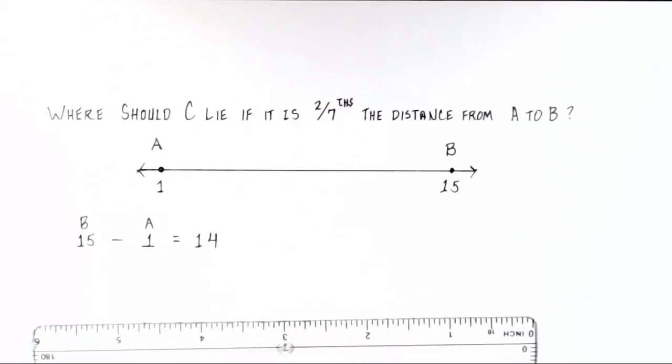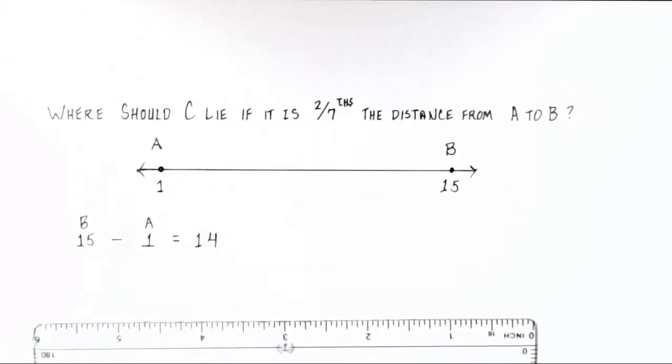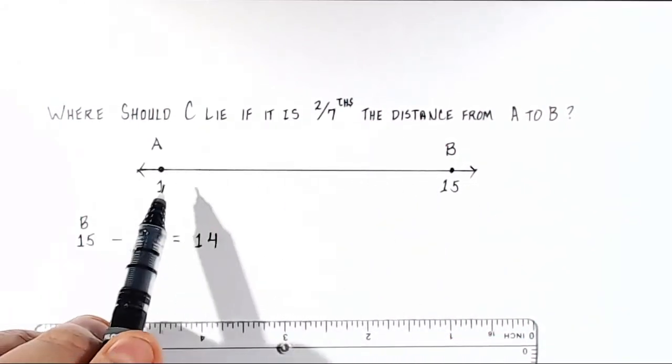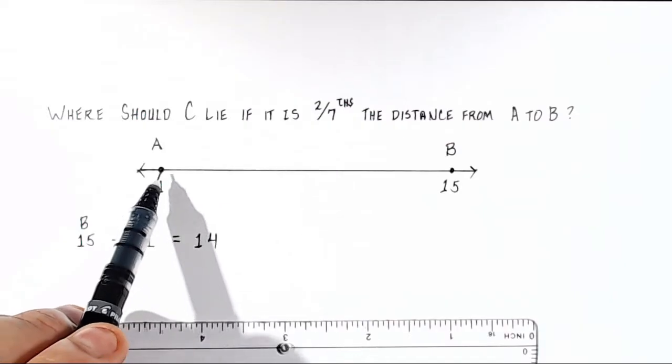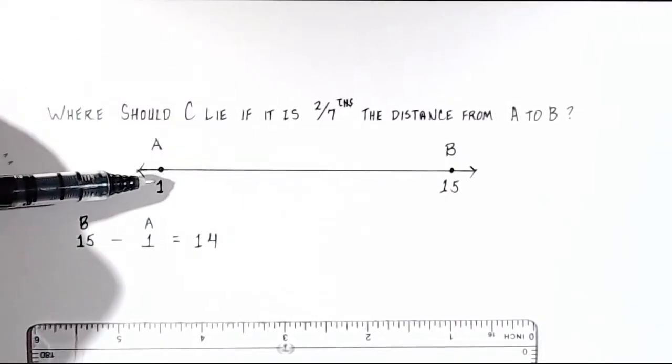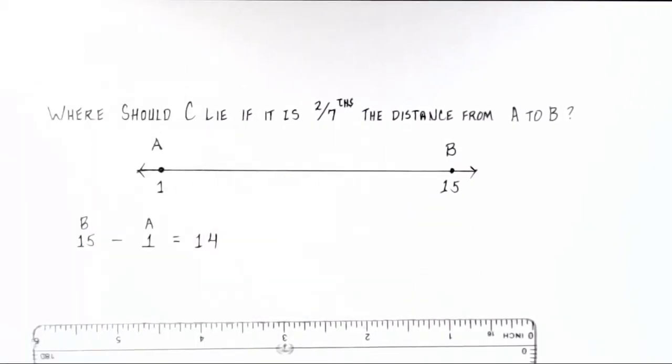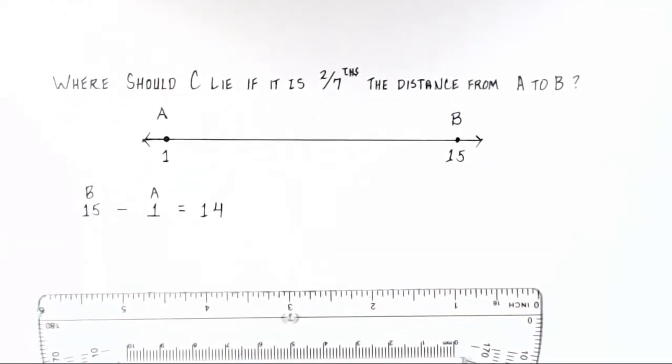Well, now what do we do? It asked us to determine what place on this number line two-sevenths the distance from A to B would lie. That is, if we start at point A at 1 and we move forward two-sevenths of the total distance between these two points, where will we be? Here's how you determine that.